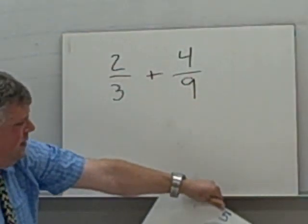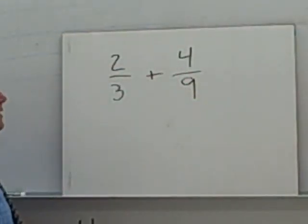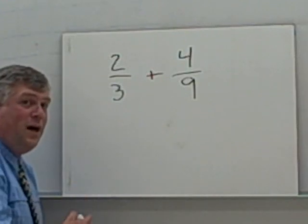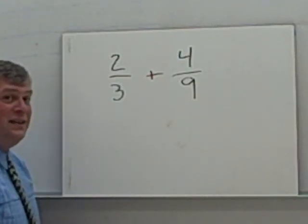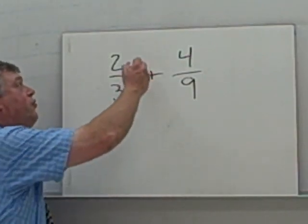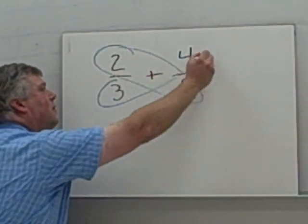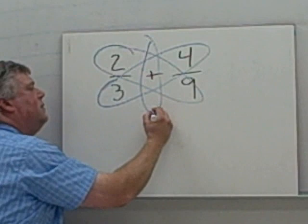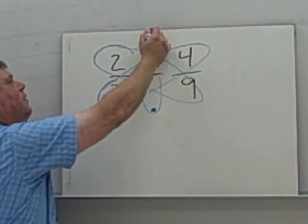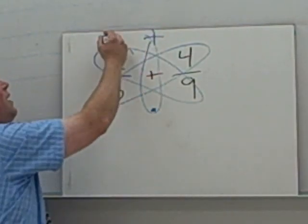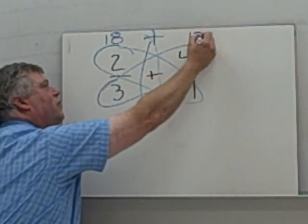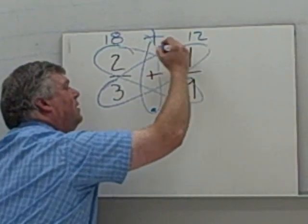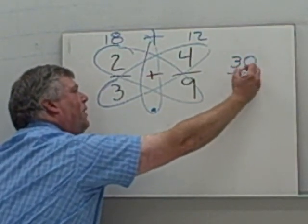What if it's not our least common denominator? The least common denominator here would be the 9. But not everyone can see that that quickly. They can go straight to the butterfly method. Times, plus, we do 2 × 9 = 18. 3 × 4 = 12. Add those two together, 18 + 12 gives me 30.